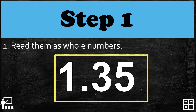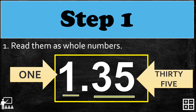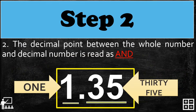I have here an example: one point thirty-five. We're going to read the whole number part, which is one, and also the decimal part, which is thirty-five. So we have 'one and thirty-five.' Step two: the decimal point between the whole number and decimal number is read as 'and.'